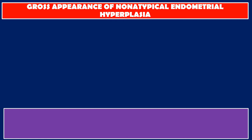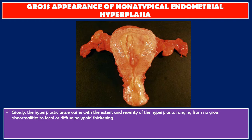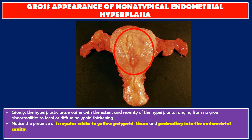Gross appearance of non-atypical endometrial hyperplasia: the hyperplastic tissue varies with the extent and severity of the hyperplasia, ranging from no gross abnormalities to focal or diffuse polypoid thickening. In this photo, notice the presence of irregular white to yellow polypoid tissue protruding into the endometrial cavity. Endometrial polyps and foci of adenomyosis may also be involved by hyperplasia.